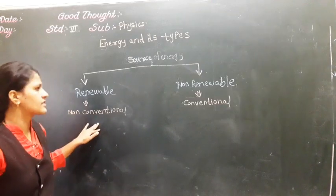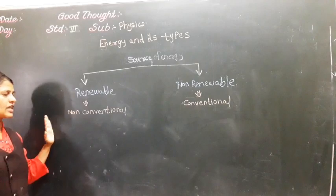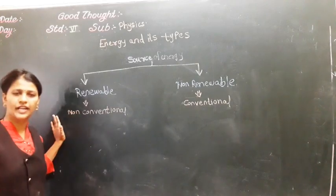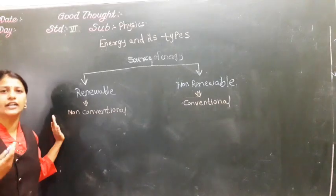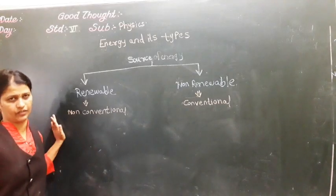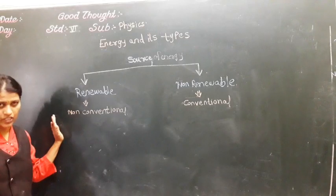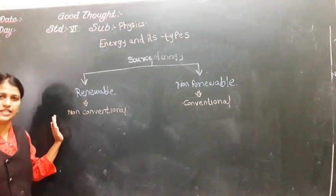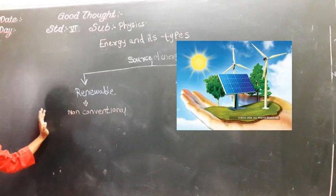Renewable sources of energy are inexhaustible, meaning we can get this energy again and again. For example, the sun — that is solar energy — and wind energy. These come under the renewable source of energy.